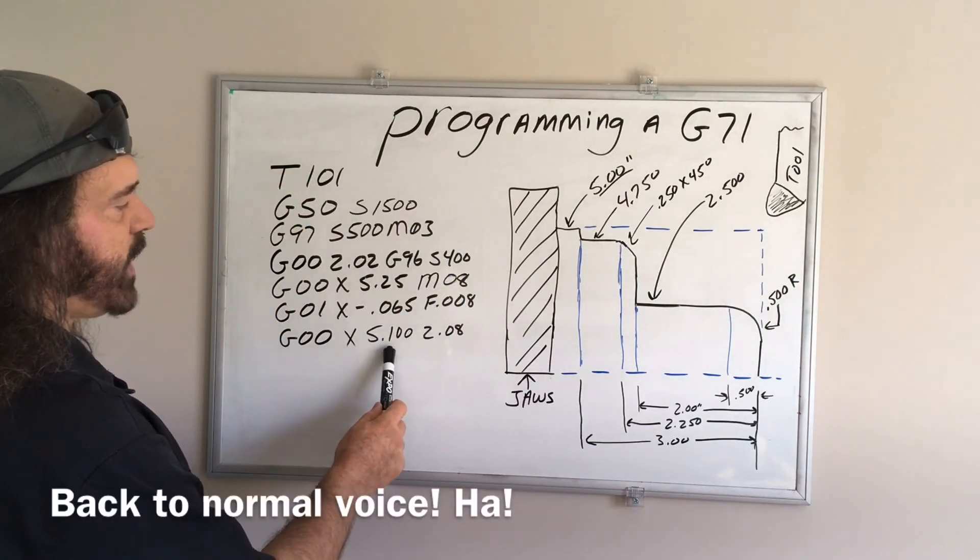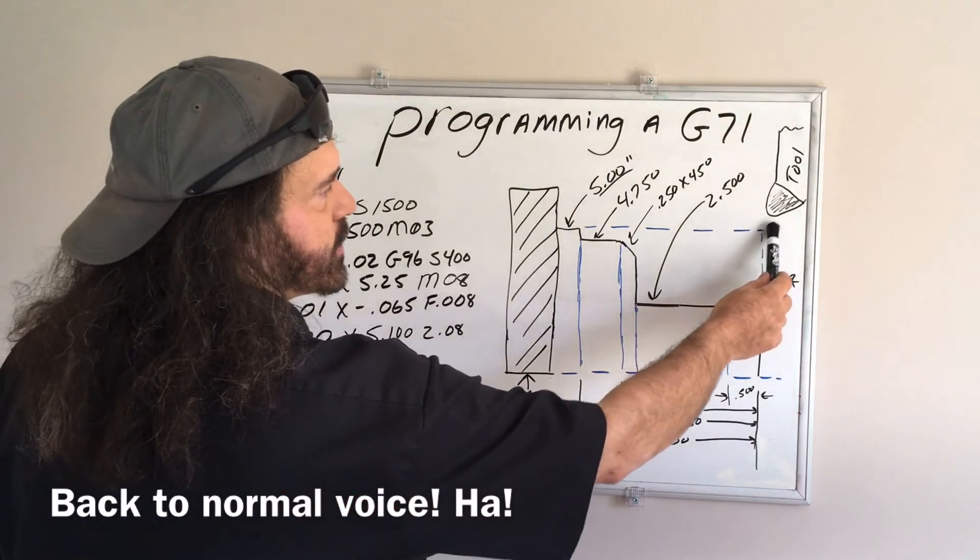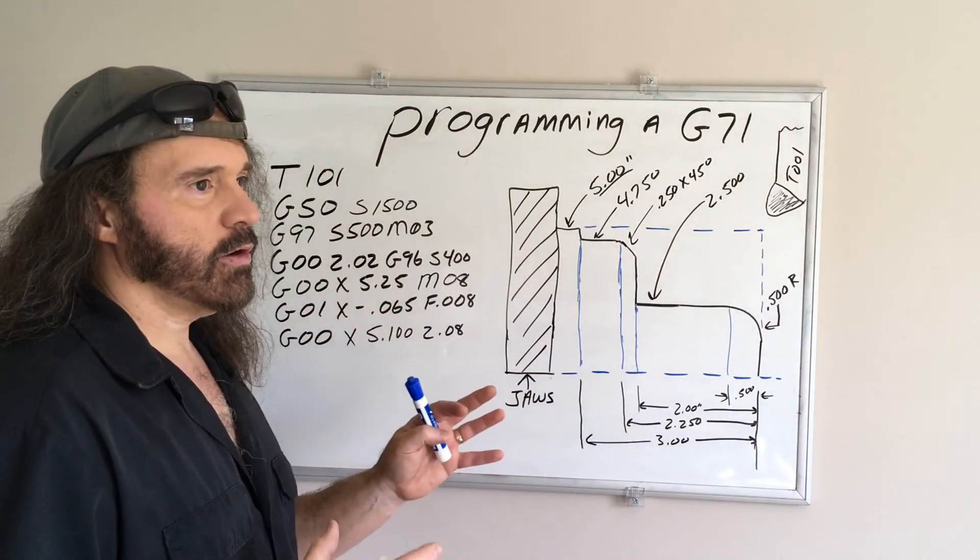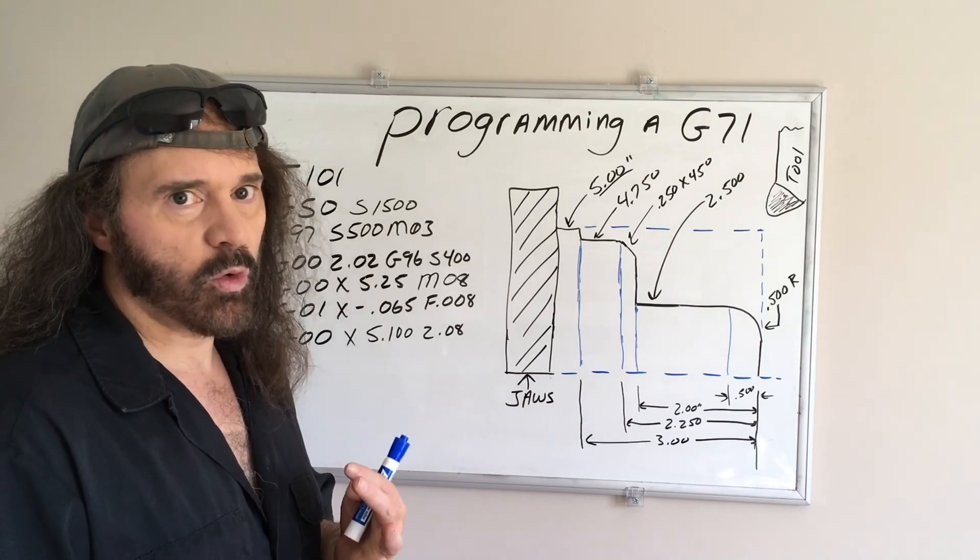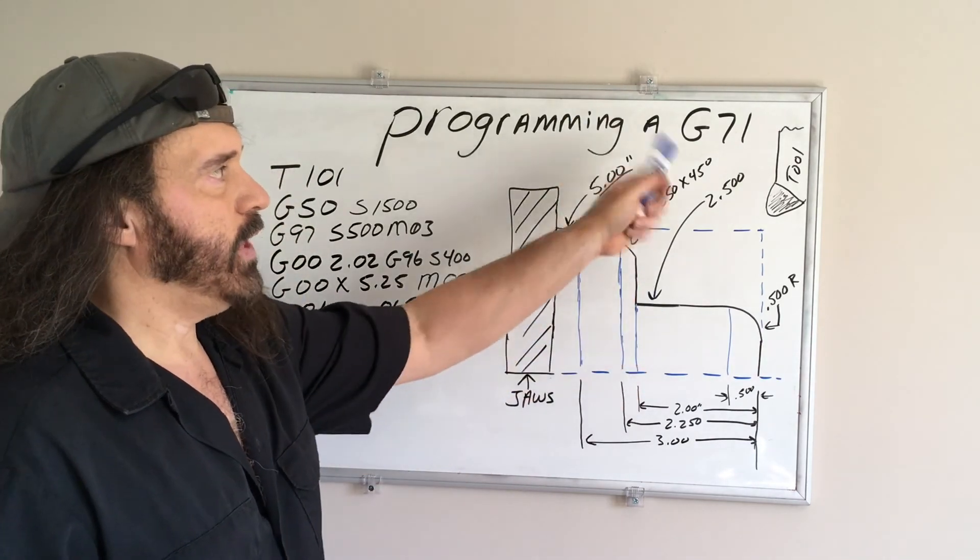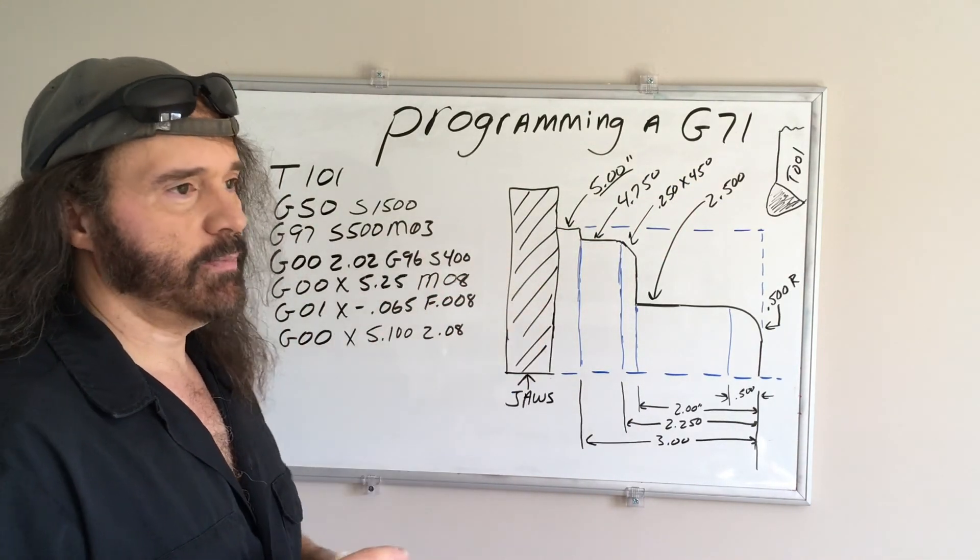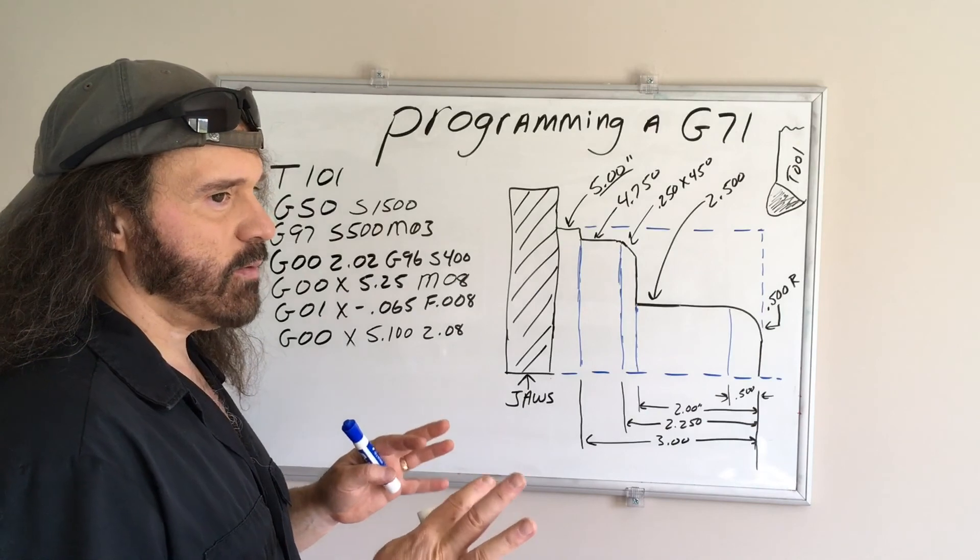We're going to rapid back up to x5.1, z.08, so you're 80 thousandths in front of the part. If you are going to use a different tool to do a finish pass, then you have to use a G70, which is a finish pass, and I don't want to get too crazy with that right now.